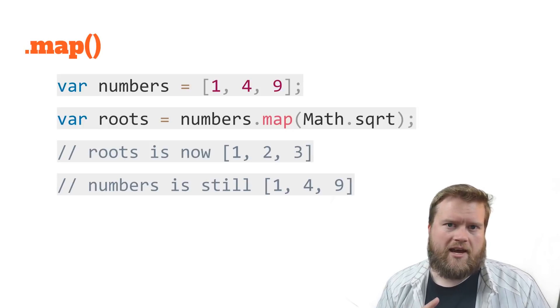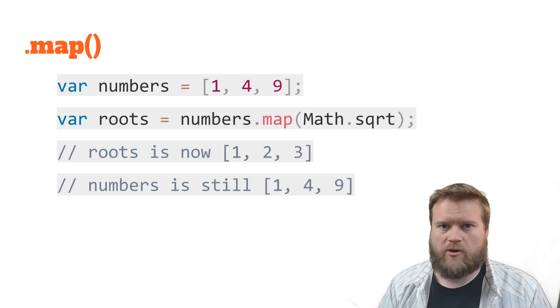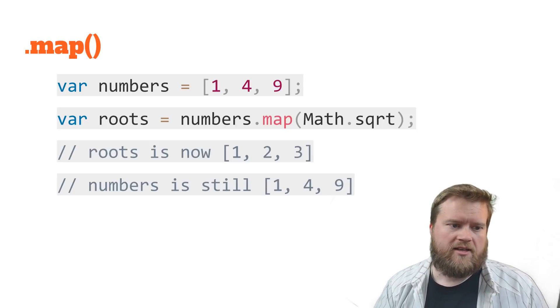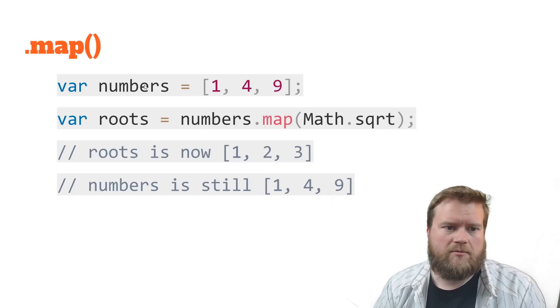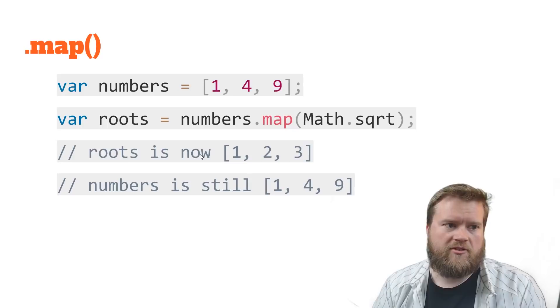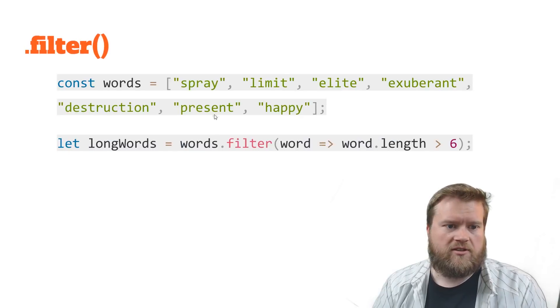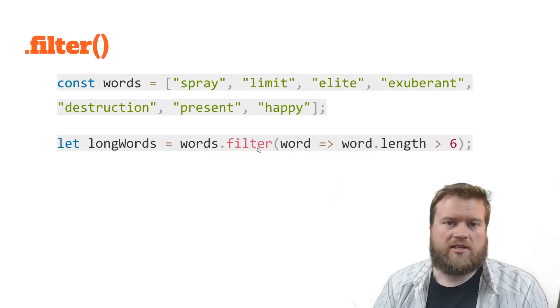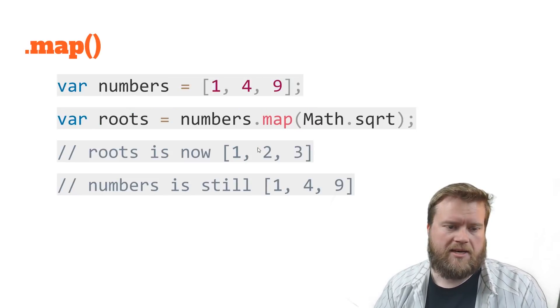When you use filter, map, or reduce these array functions, you actually aren't changing the values inside the array. This goes back to functional programming and mutations. We never want to take an array and actually change it. We're always returning a new array. So make sure to remember that.